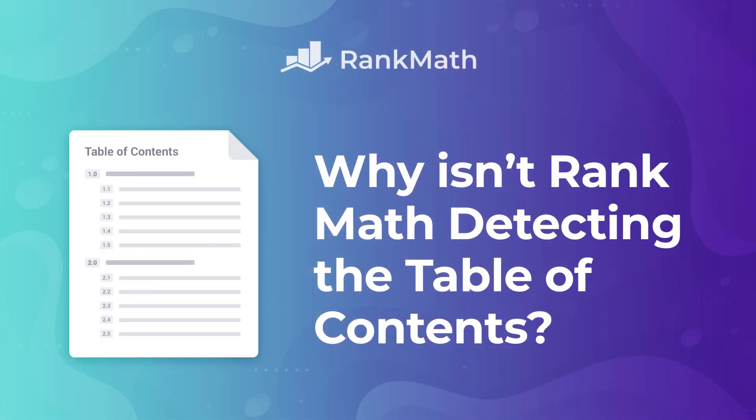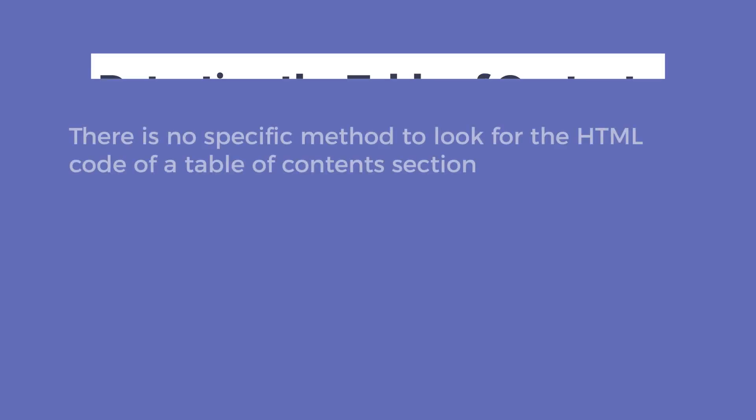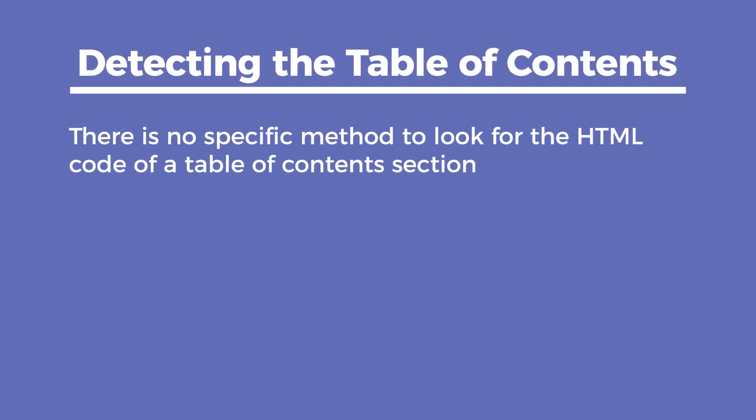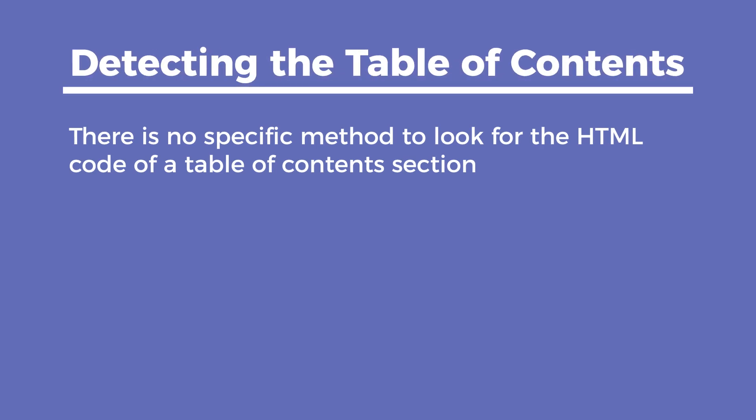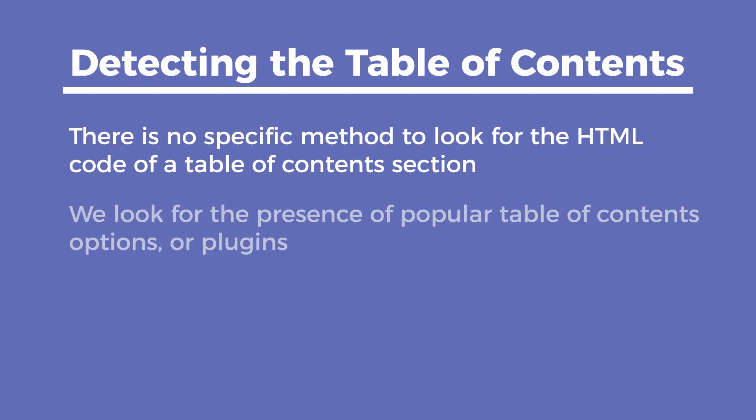Hi, I'm Kate. We will see how to make Rank Math detect the table of contents in case you have added one but it hasn't been identified. We need to start by explaining that there is no specific method to look for the HTML code of a table of contents section, so the plugin cannot search for it just by looking at the code. Instead, we look for the presence of popular table of contents options or plugins.